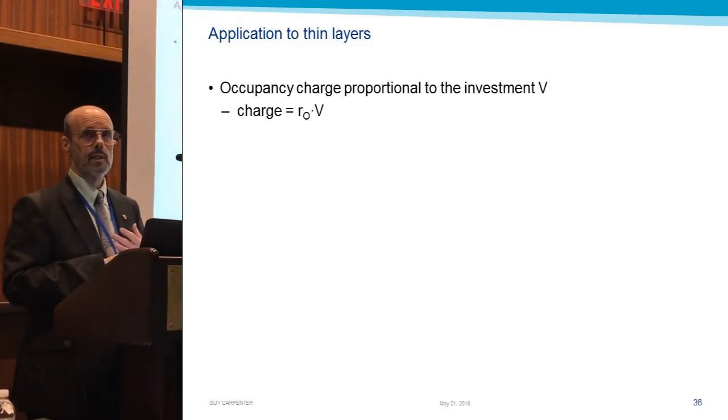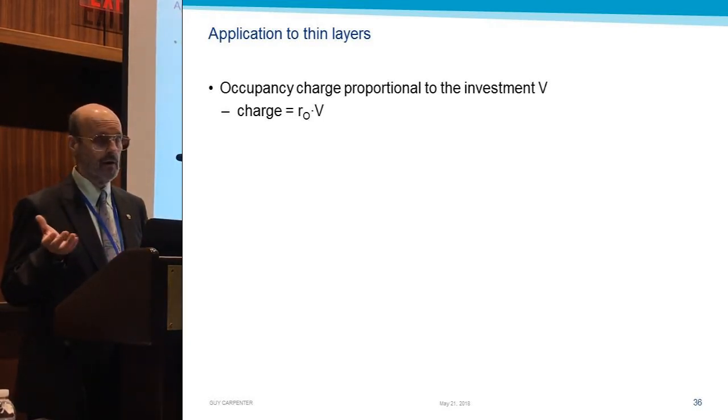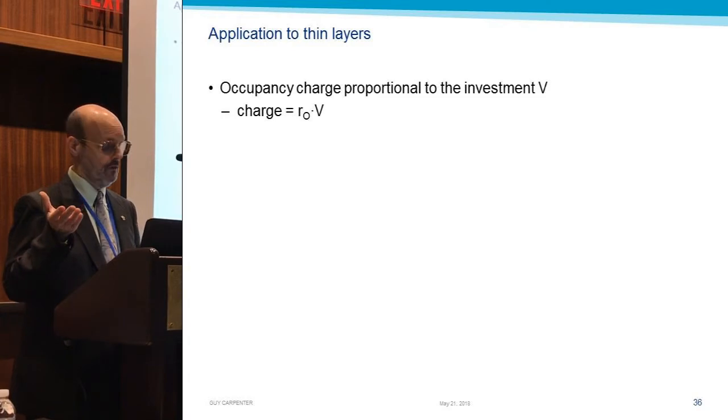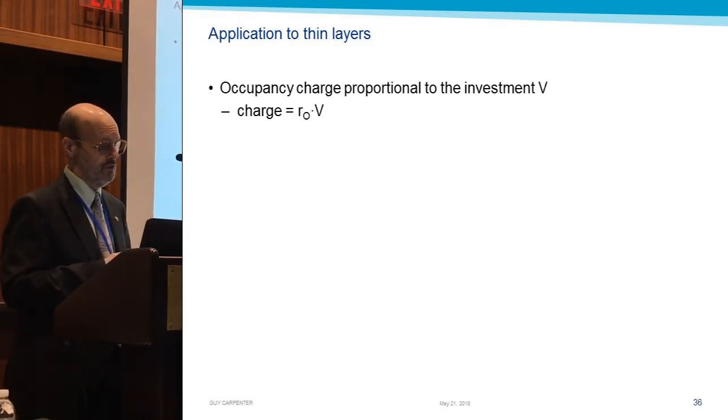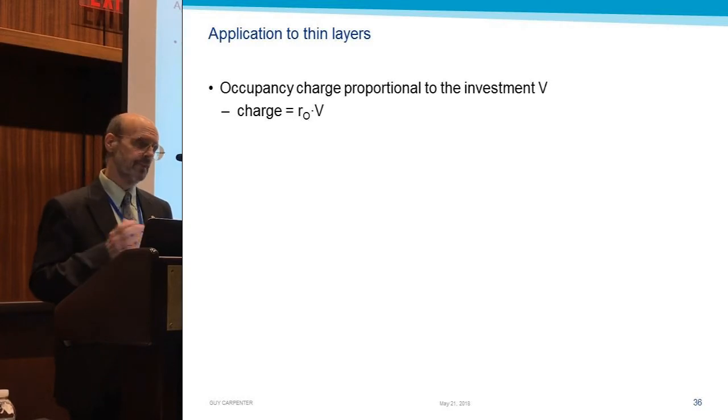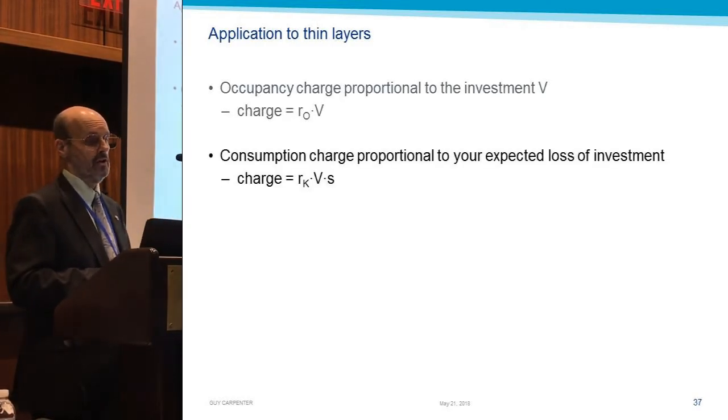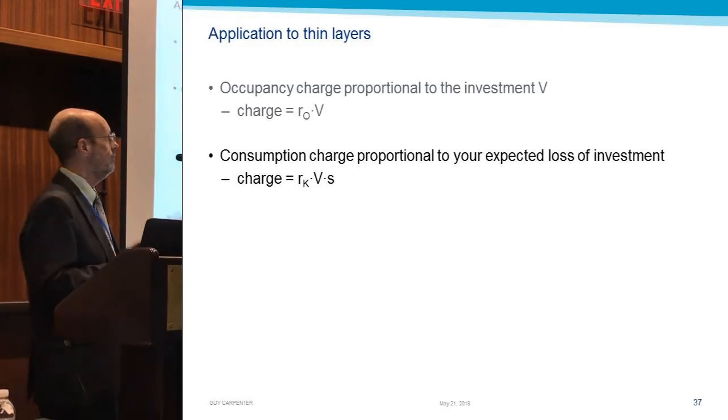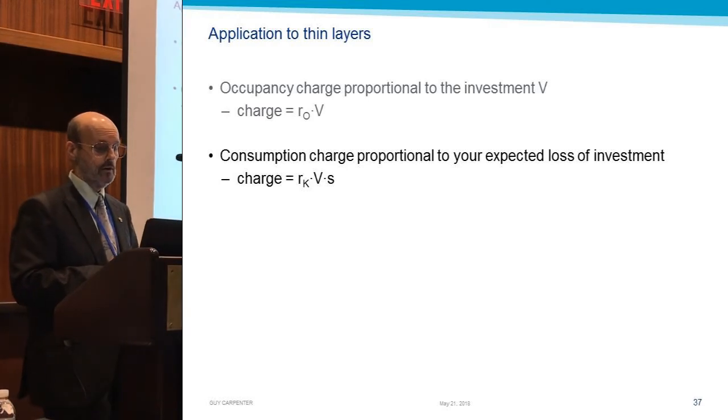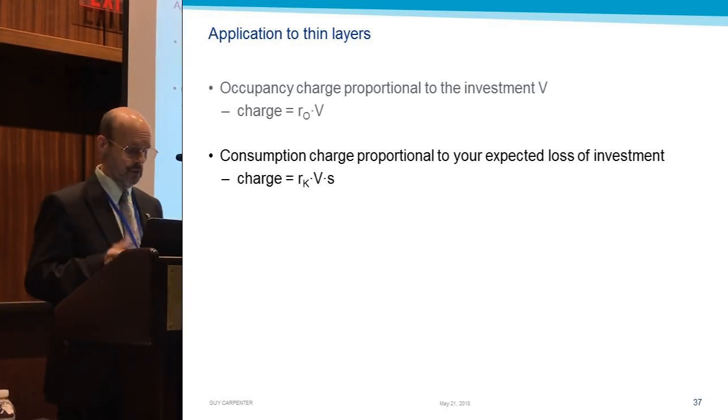Maybe it's going to be greater than the risk-free rate because of a number of reasons. There might be a liquidity issue going on. You might be borrowing this money, and in effect from shareholders, you are borrowing their money. Then there's financial frictions. There's all this taxation. There might be tax issues. There's a whole host of reasons why it might be greater than the risk-free rate. But it's not going to be a huge number. On the other hand, the consumption charge, we want to make proportional to the expected loss. So V times S is the expected loss. And we're going to hit that with an R sub K, which is going to be a much larger number.